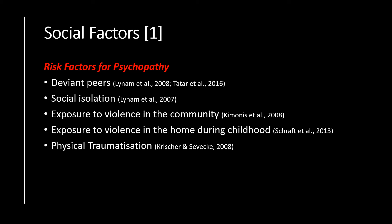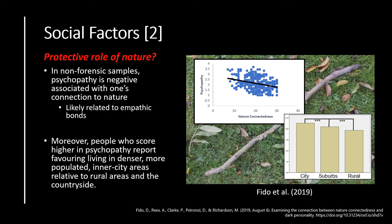As psychologists, we may look at potential interventions which can be put in place at an early age in order to dampen the development of psychopathy. In my own research, we look at the role of nature as a potential protective factor for the development of antisocial behaviours associated with psychopathy. In a large non-forensic sample, psychopathy was found to be negatively associated with one's connection to nature — for example, how intertwined they felt with nature and how important nature was in their lives. This is likely related to the empathic bond which people develop with others, something which psychopaths drastically lack. We also found that people who score higher on psychopathy report favouring living in denser, more populated inner city areas relative to rural areas and the countryside.